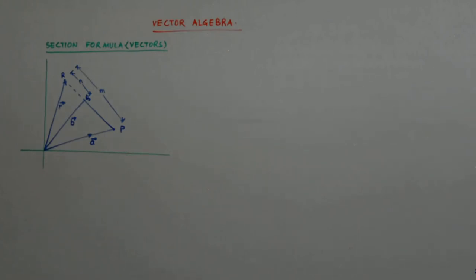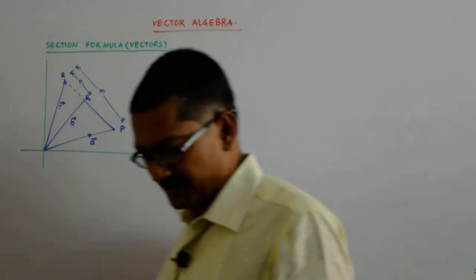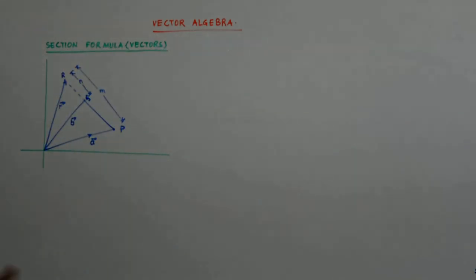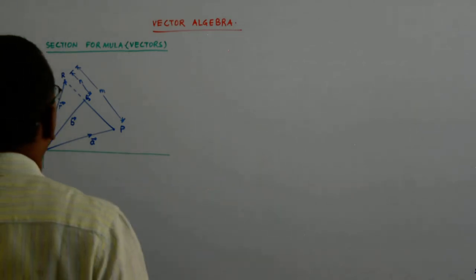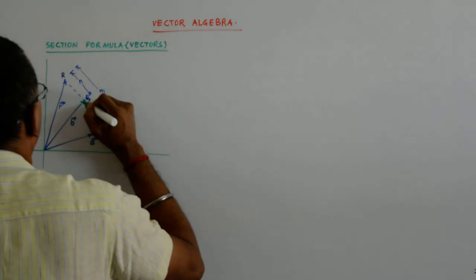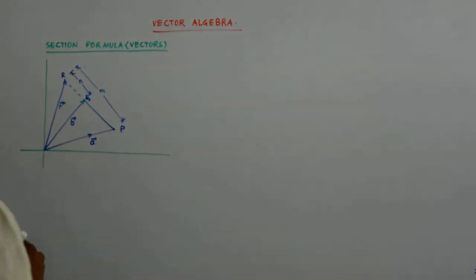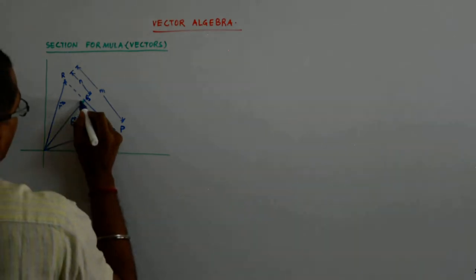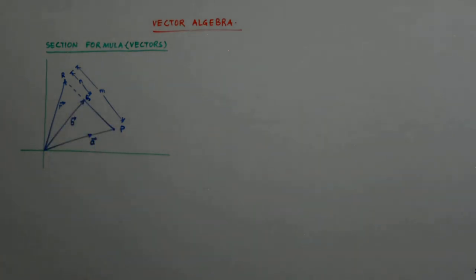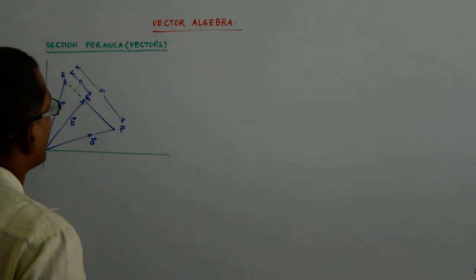Now we come to the case where R is external to the vector joining P and Q. It becomes external, right? And I have to find the value of R. Now there are again two ways of doing the same thing. How do we go about it?